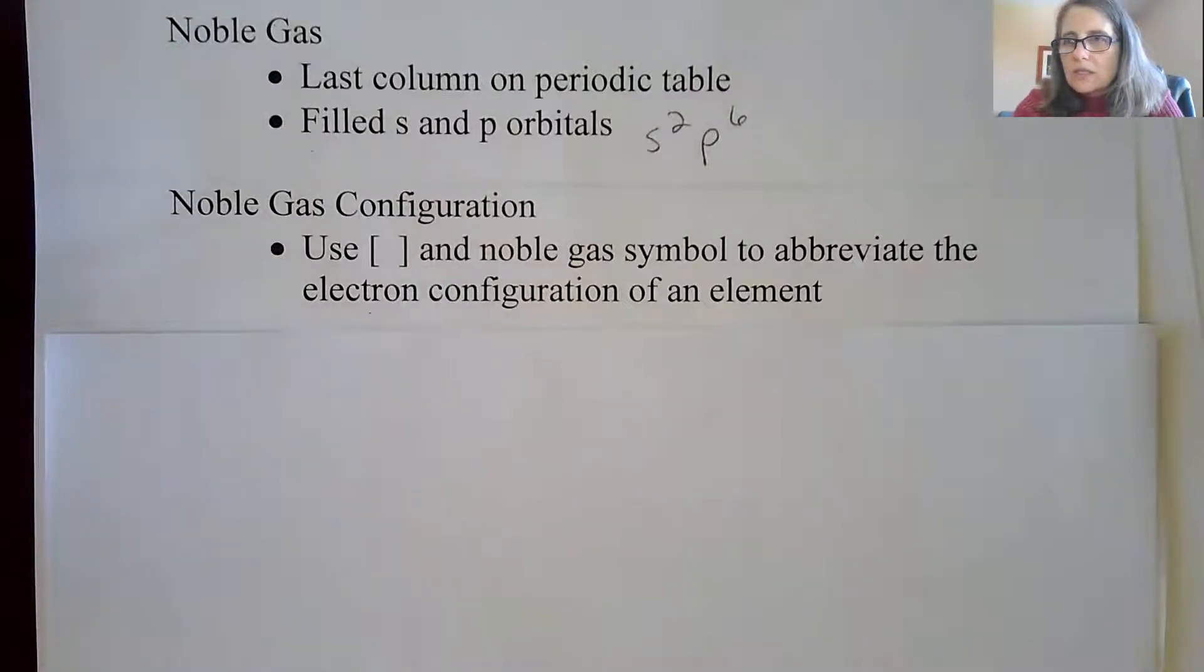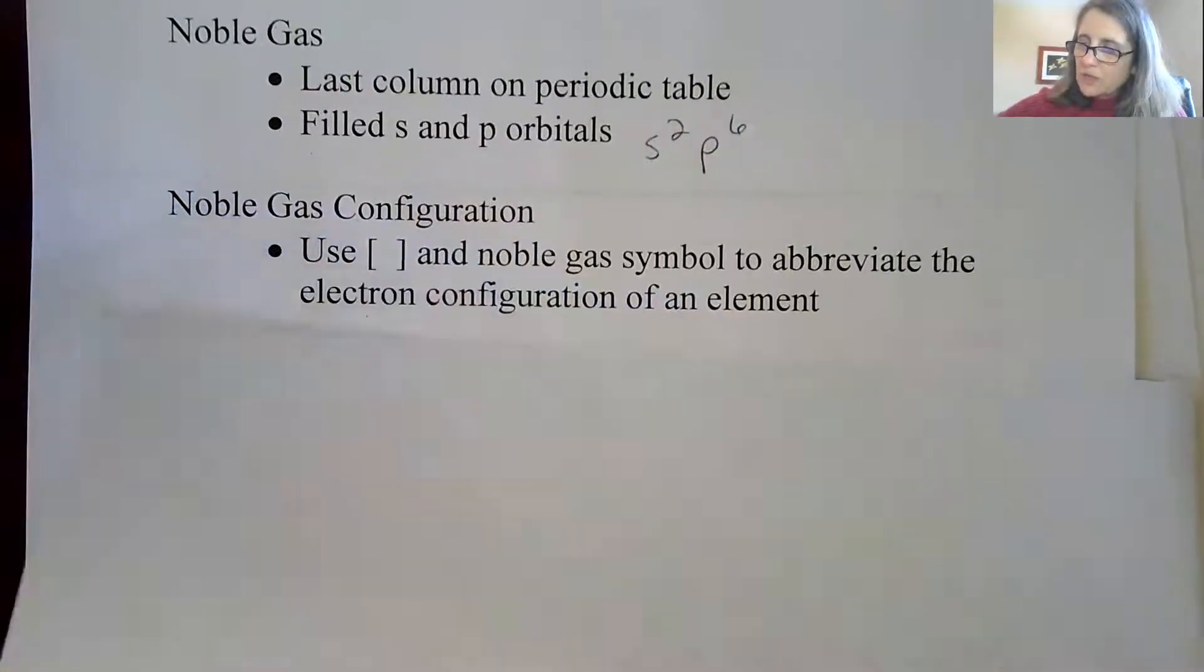So the noble gas configuration is sometimes found on different resources because you don't have to start at 1s², 2s², 2p⁶ for some of the bigger elements. And it's a faster way of writing them and a more important way because they're going to show us something called valence electrons.